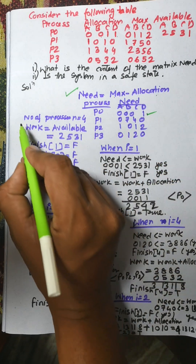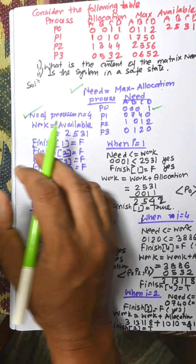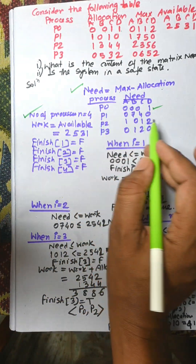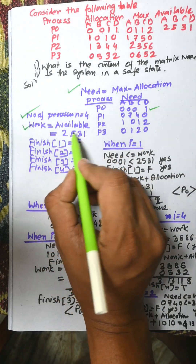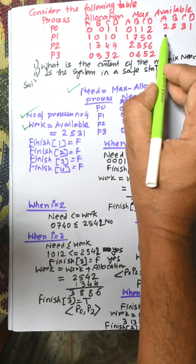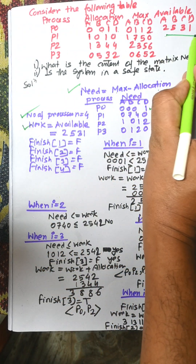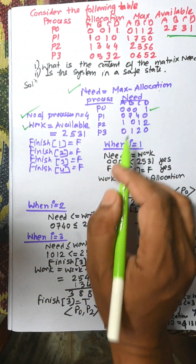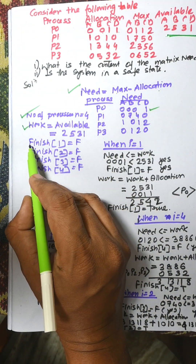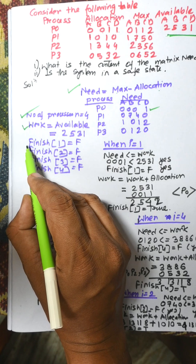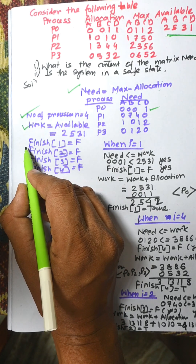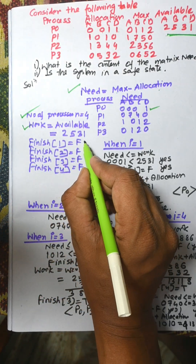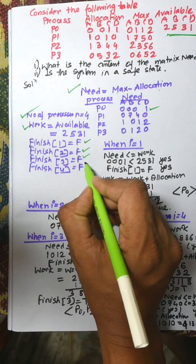The number of processes equals four. Work is initially set equal to Available, which is 2, 5, 3, 1. The Finish matrix is initialized to false, false, false, false for all processes.